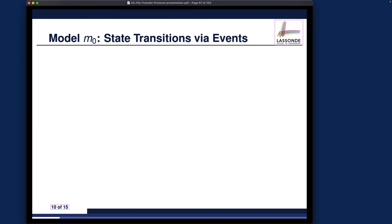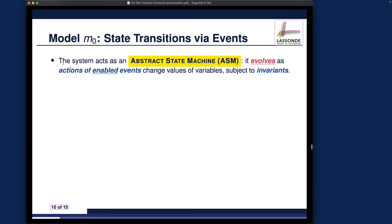We went over the design for the abstract state space for the initial model. Let's now see how we can change the state value by using state transitions or events. This is a general principle: we interpret our system model as an abstract state machine, showing how the state goes from one to another using state transitions. We want to talk about the guards and actions for each event — events can only occur if the guards are enabled, meaning the guards must evaluate to true.